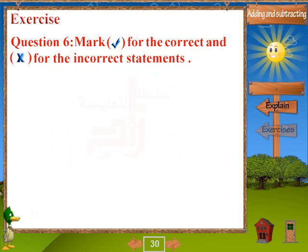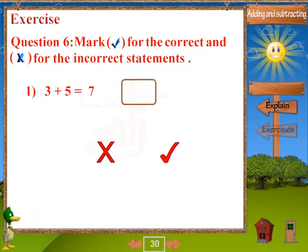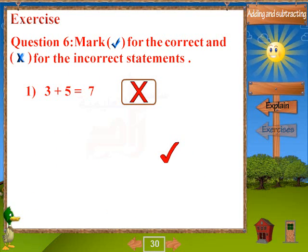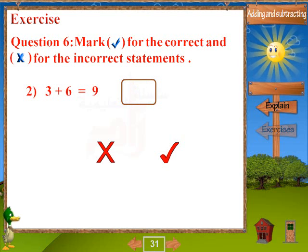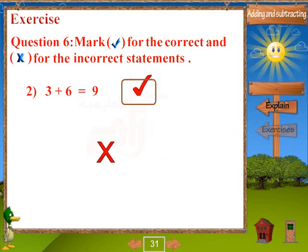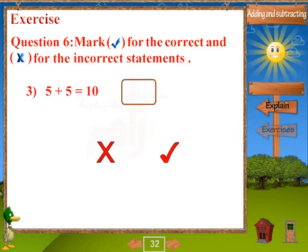Question 6: Mark check for the correct and X for the incorrect statements. 1. 3 plus 5 equals 7. 2. 3 plus 6 equals 9. 3. 5 plus 5 equals 10.